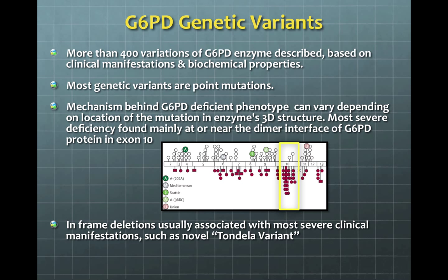More than 400 variations of the G6PD enzyme have been described based on their clinical manifestations and biochemical properties, and most of these variants are point mutations. Here you see a diagram showing the frequency of point mutations at exon 10. Frame deletions are also associated with the most severe clinical manifestations.